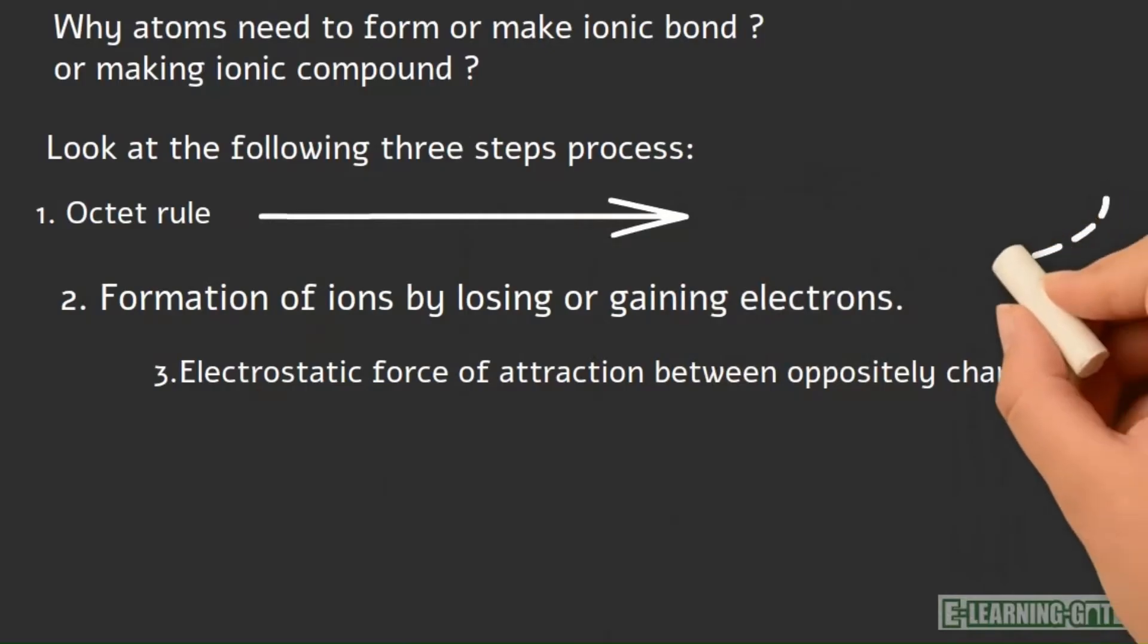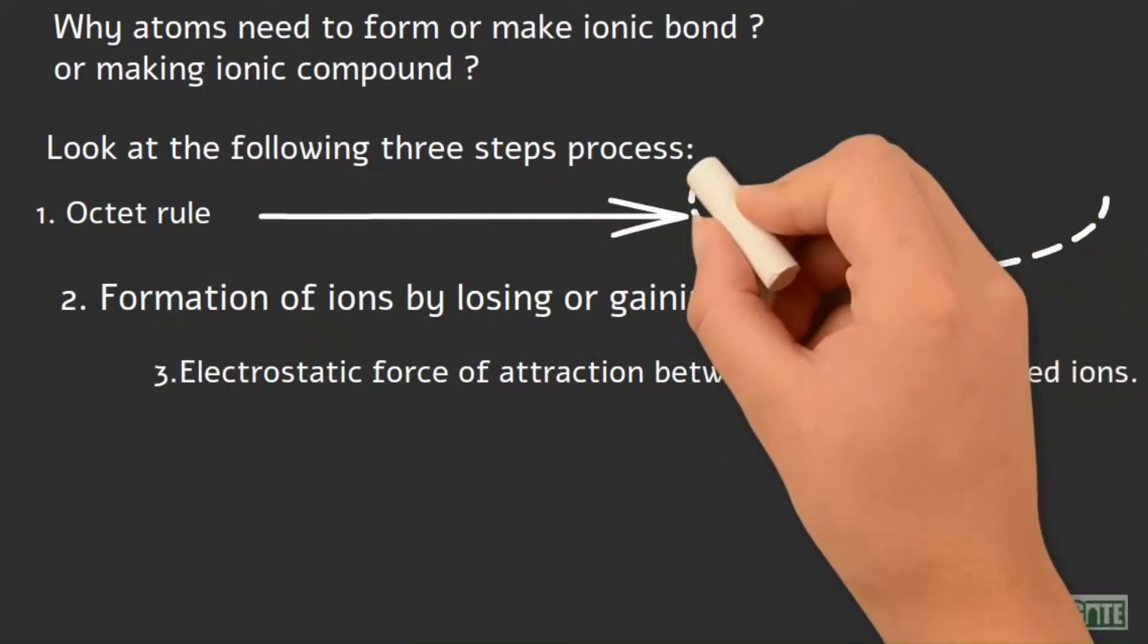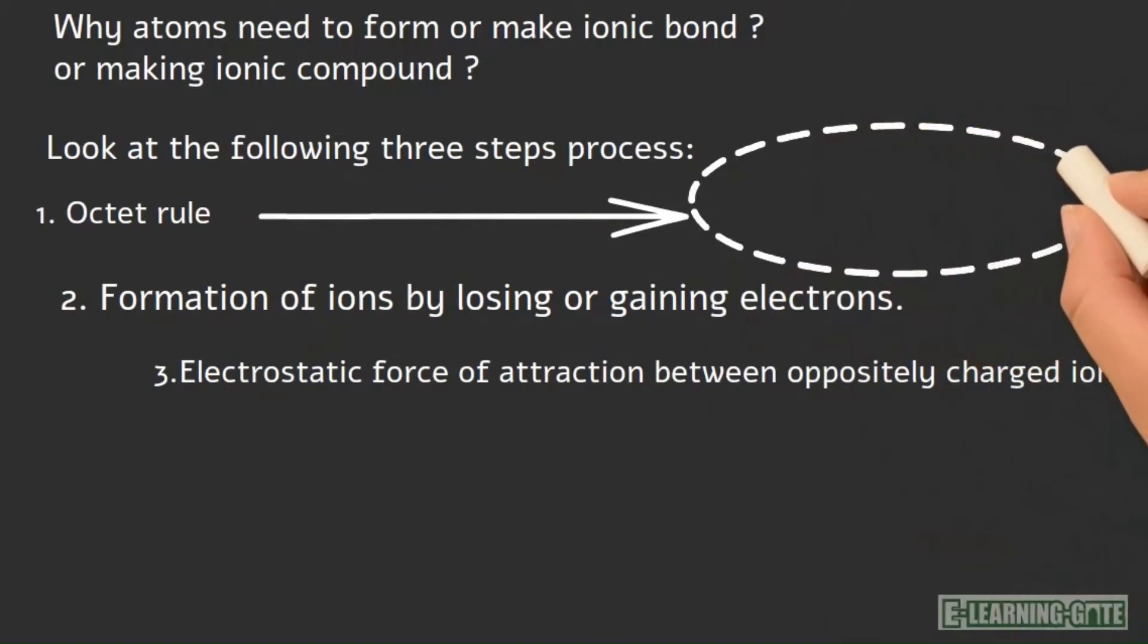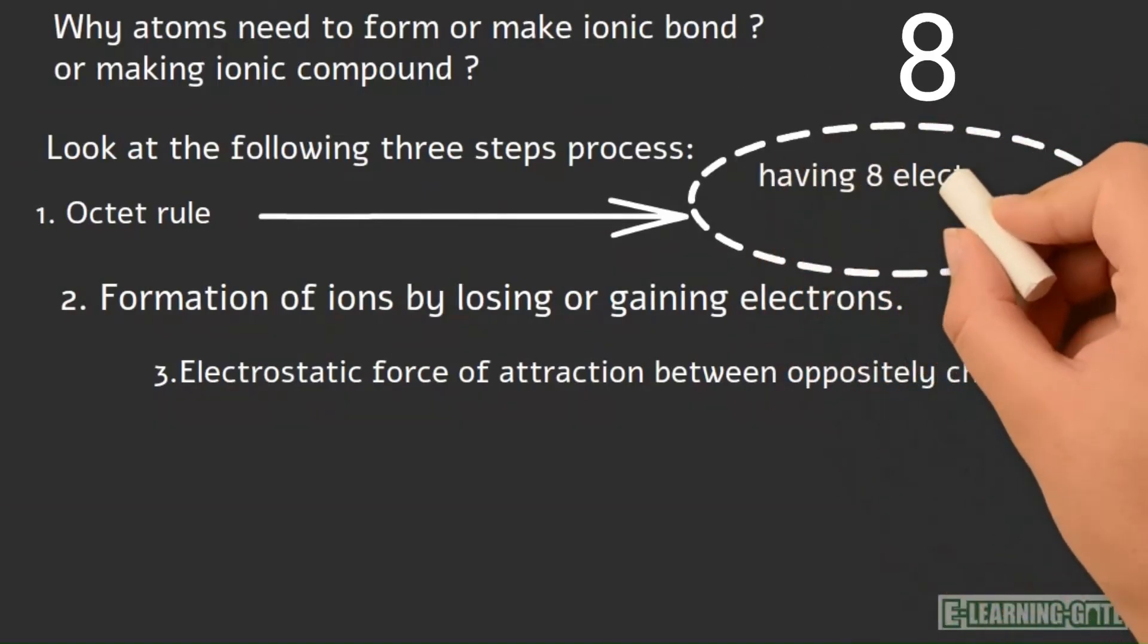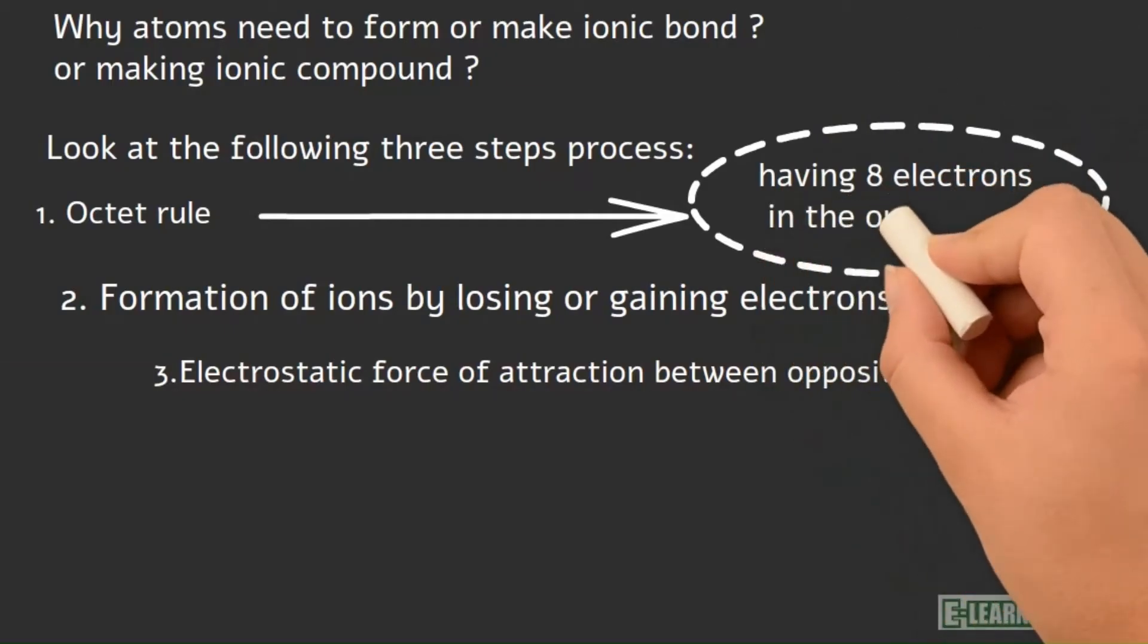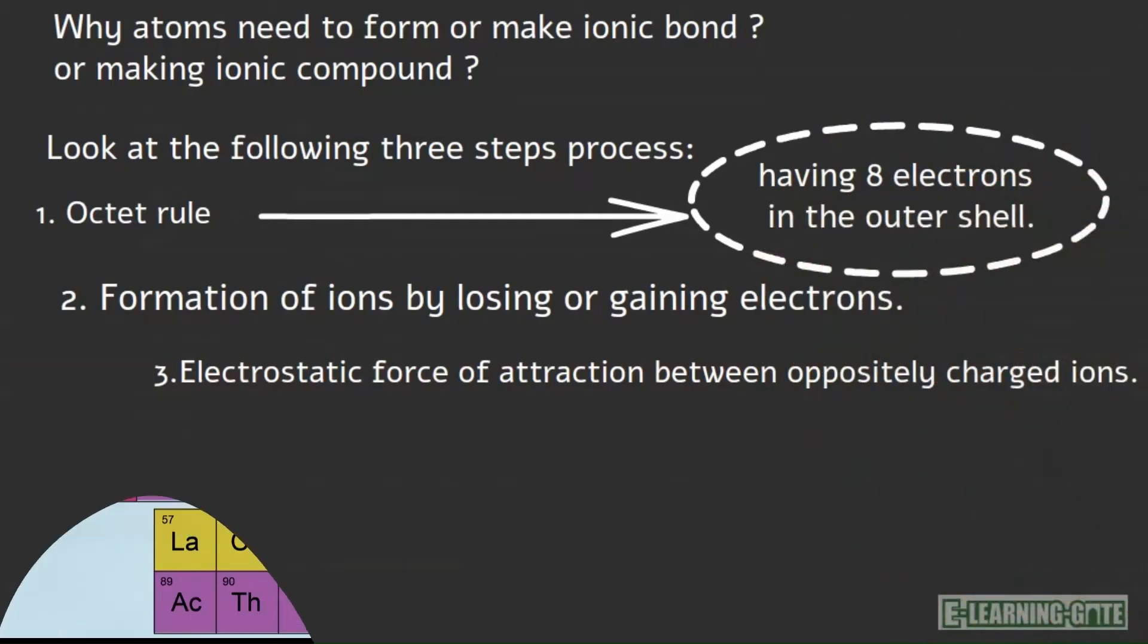Let us discuss the octet rule in detail. Octet means 8. So, every atom wants to have 8 electrons in the outer shell.